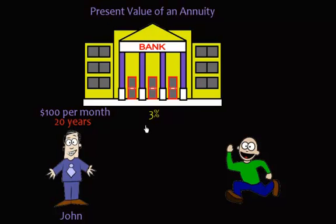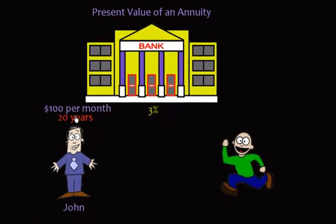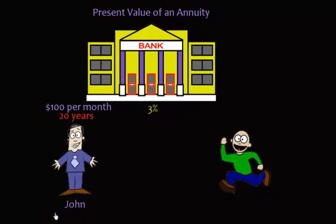$100 per month for 20 years at 3%, and we're going to compound monthly because it's $100 per month. After 20 years, John's going to have this much money: $32,830.20. That would be the future value of this annuity for John.